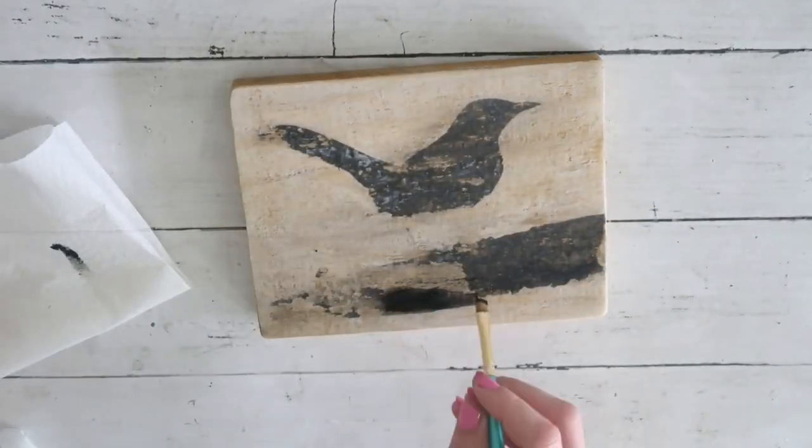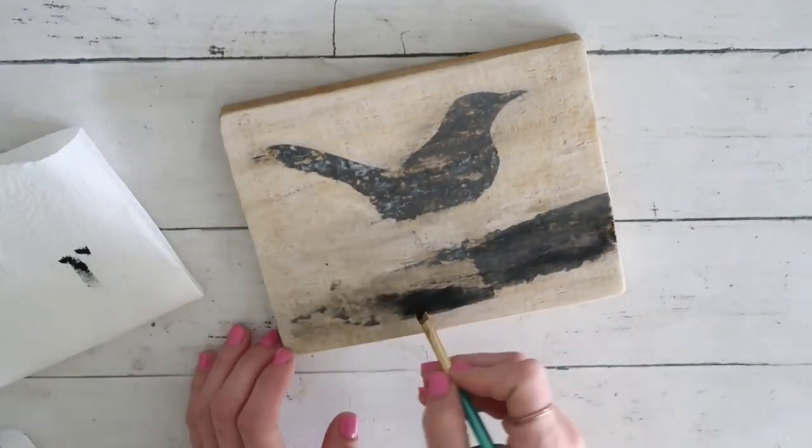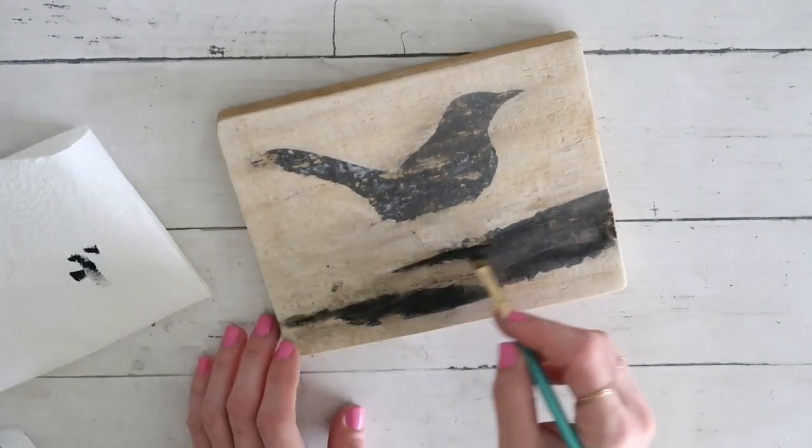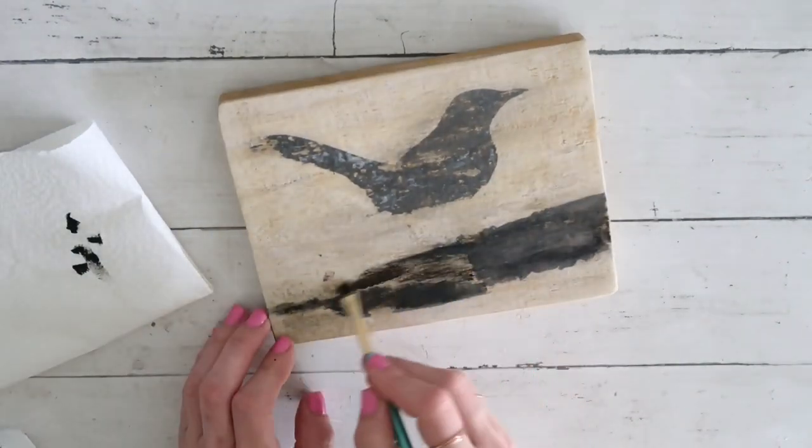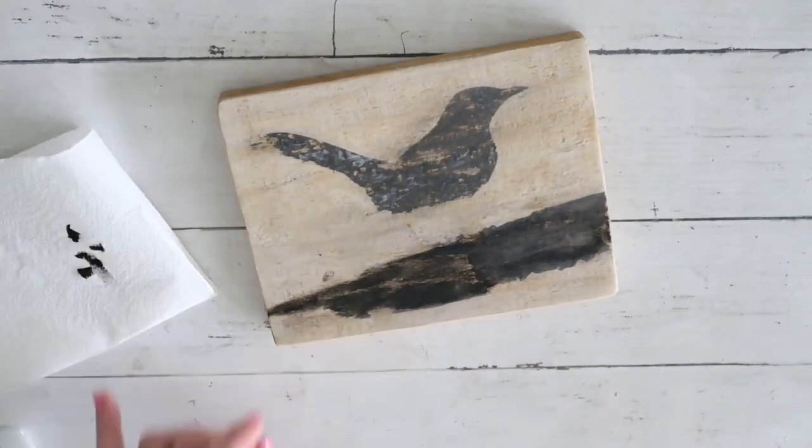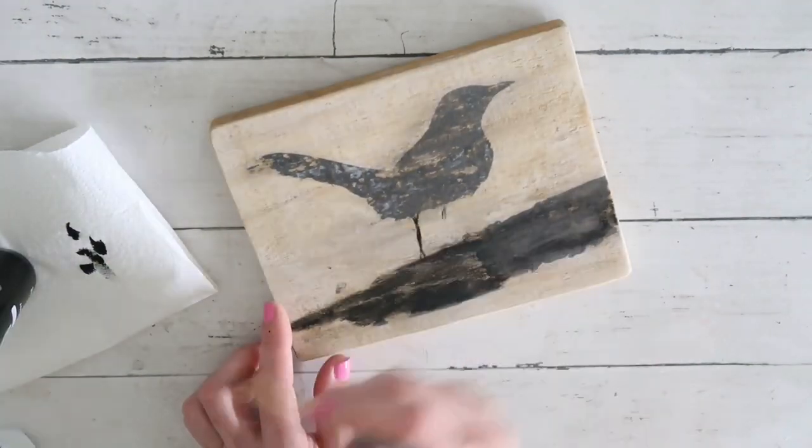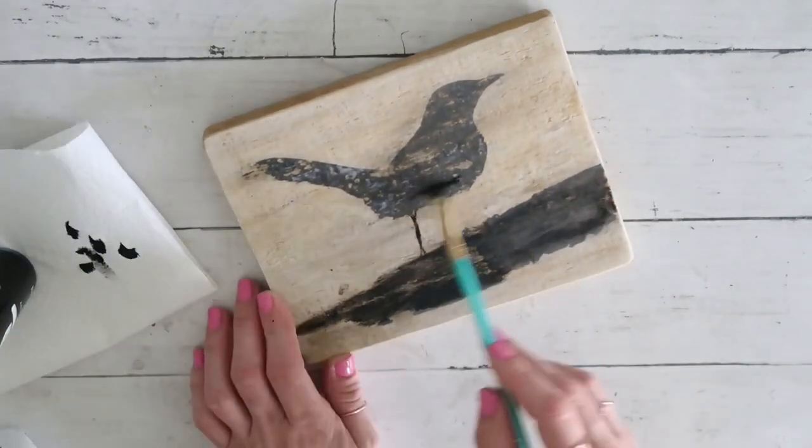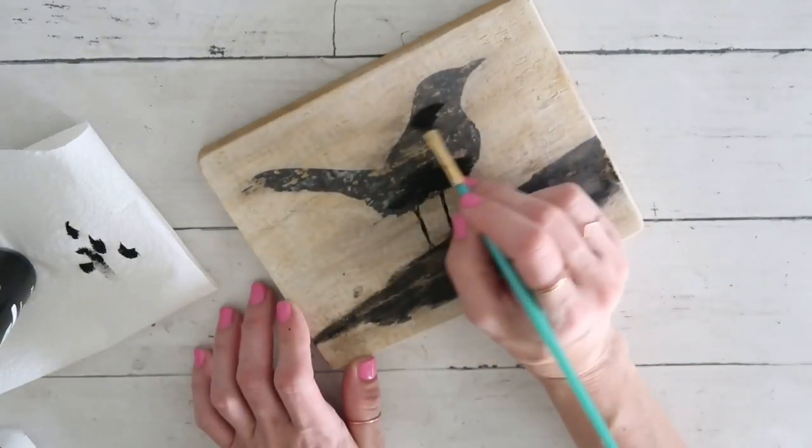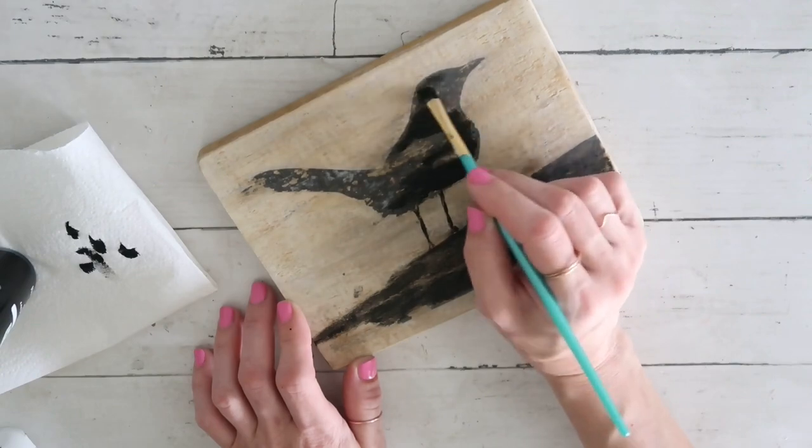After sanding it off, I decided to use black paint and just go with it and try to fix this. So I painted and I wanted it to be rustic anyway, so I decided to just add paint wherever I think it needed. After I was done with this, I'm going to go ahead and dry it really, really good.